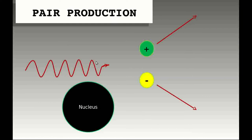Hello students, today we are going to study about pair production. In the last classes we have seen that in an interaction, a photon can give an electron all of its energy, like in the case of the photoelectric effect, or only a part of its energy, like in the case of the Compton effect. Today we will see that it is possible for a photon to materialize into an electron and a positron, which is called pair production.